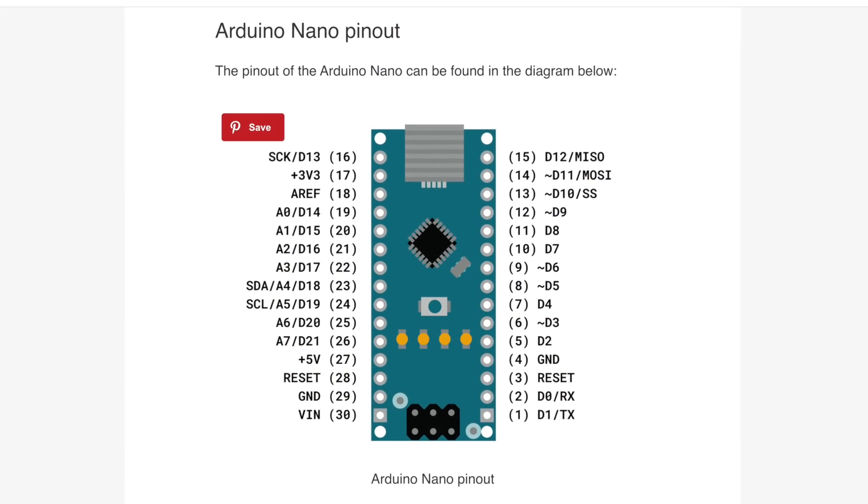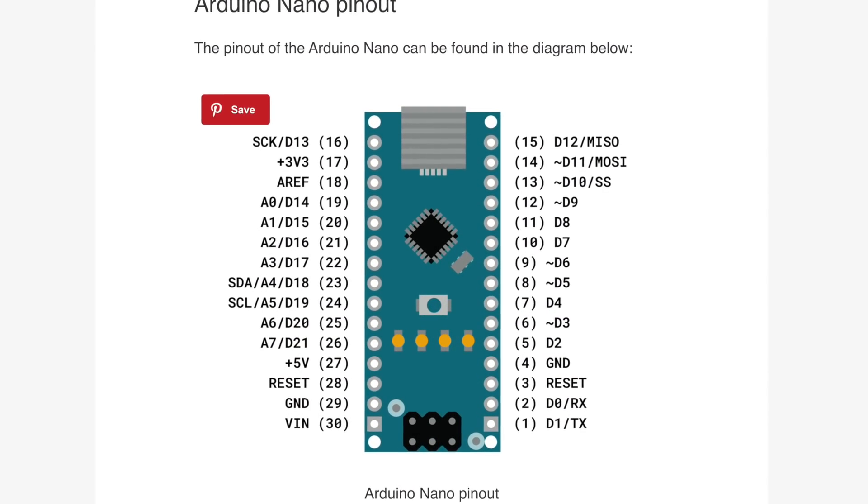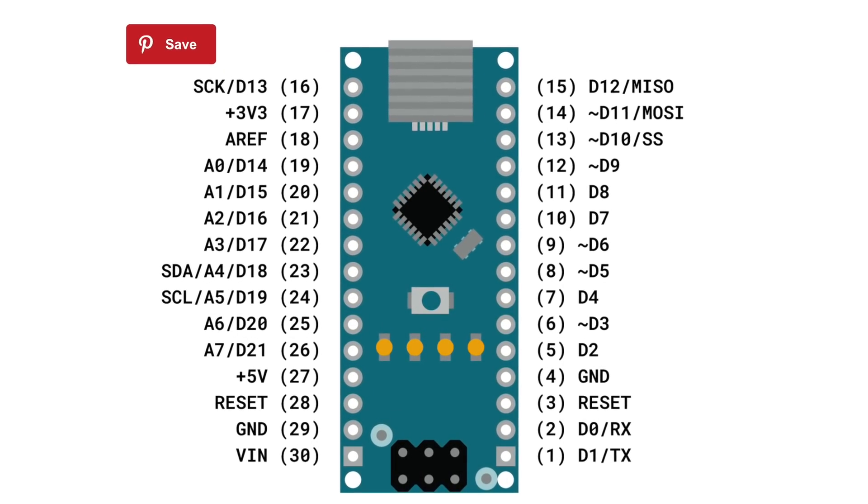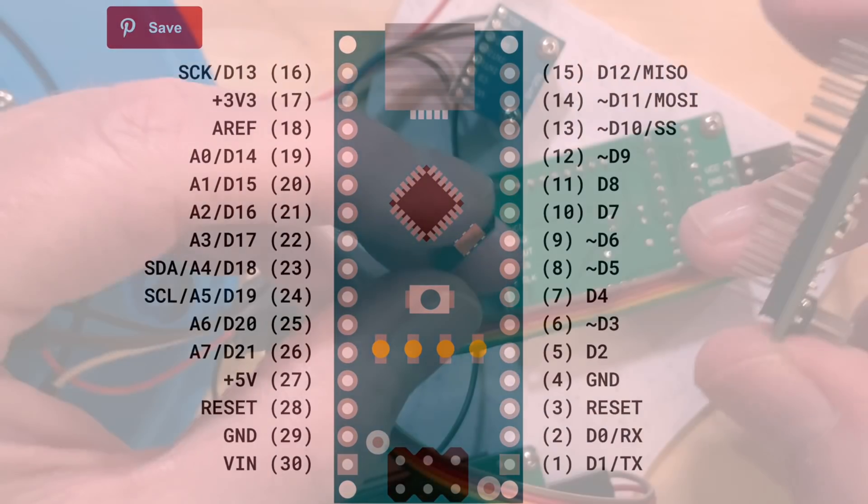It might also be handy to find and 2D print a diagram of the Nano with all the pins clearly labeled. Sometimes the tiny, tiny labels on the Nano itself are hard to read. So, let's proceed.